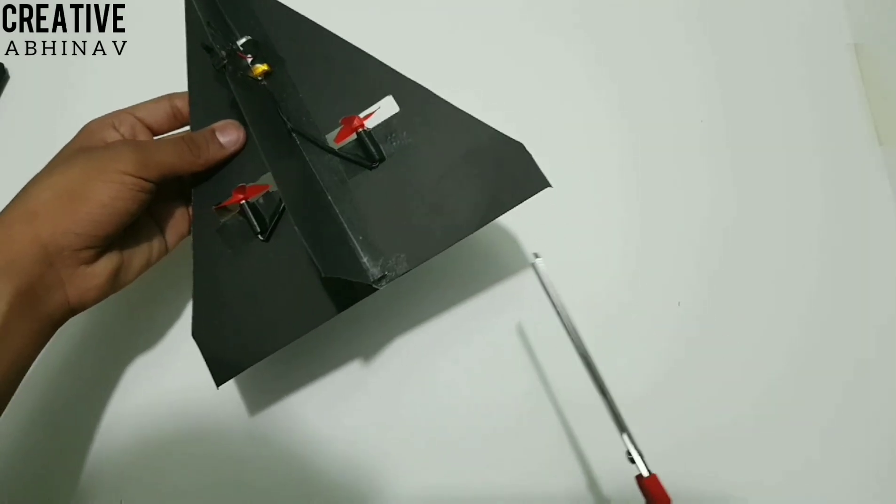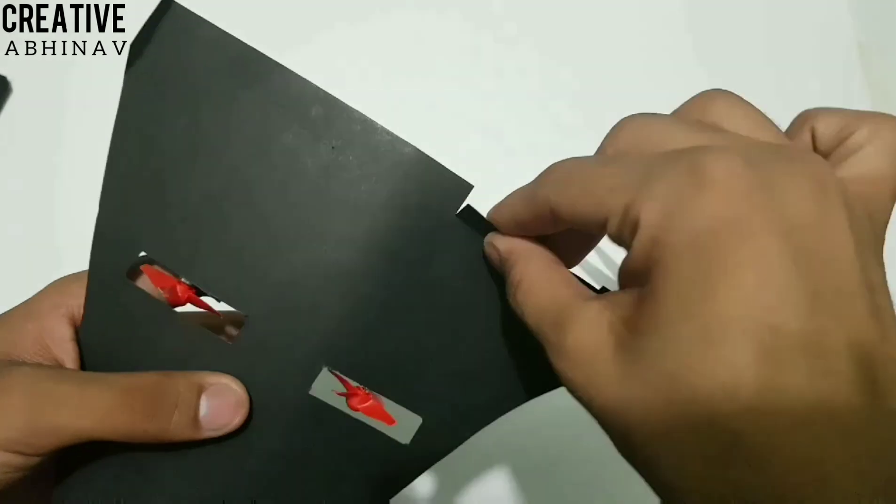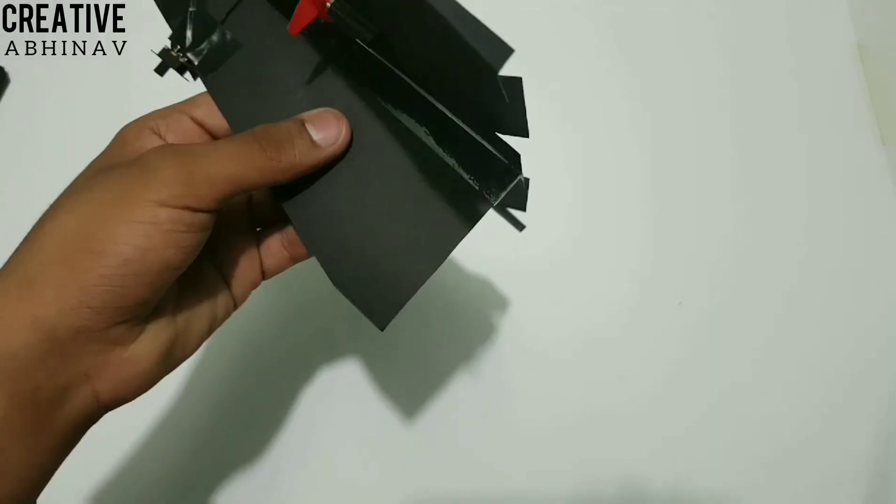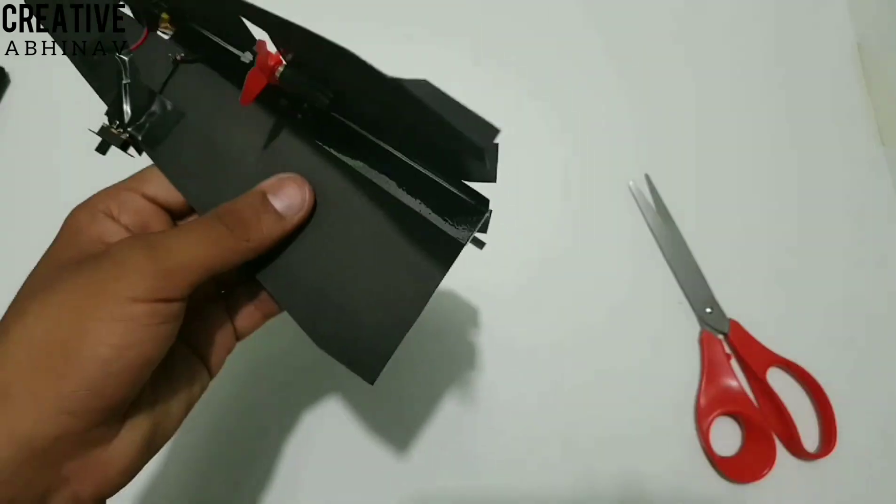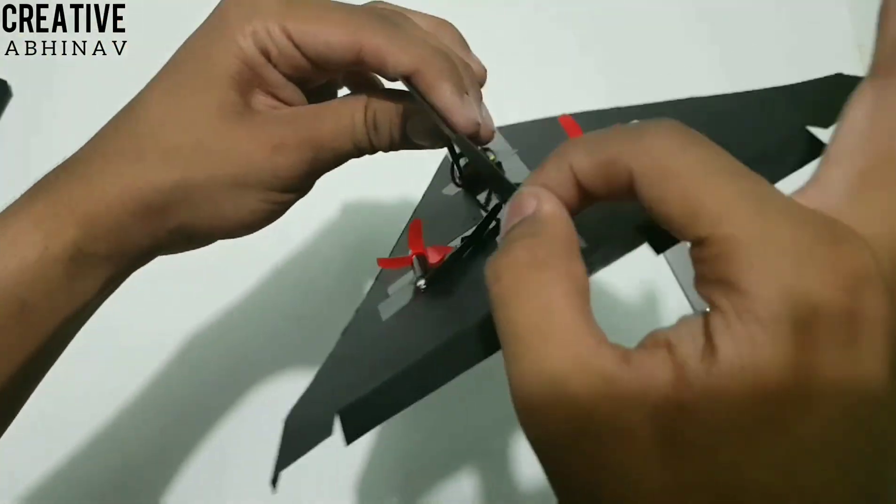Then we have to make cuts in the paper airplane to make ailerons. Then we are cutting the rudder part of our airplane. It will help in changing the directions.